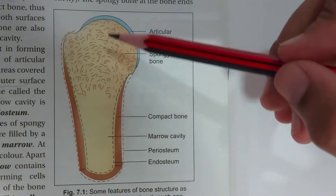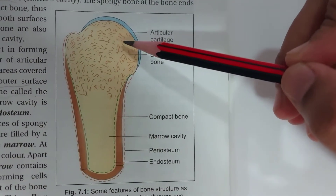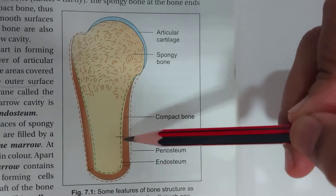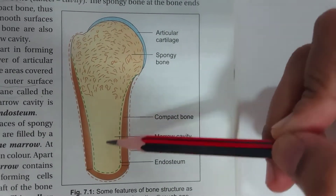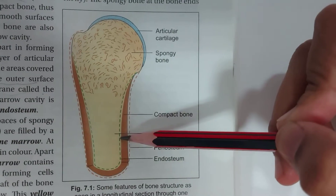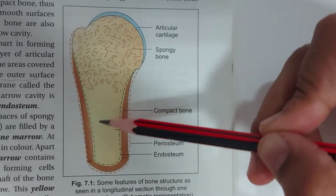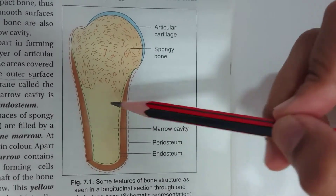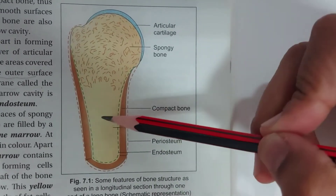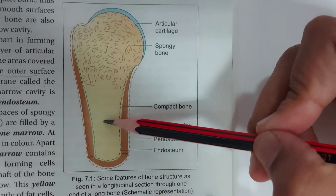There are two types of bones: compact bone and spongy bone. When we examine a longitudinal section across the bone, we see that the wall of the shaft is tubular and encloses a large marrow cavity. The wall of this tube is made up of hard dense material, and this kind of bone is known as compact bone.